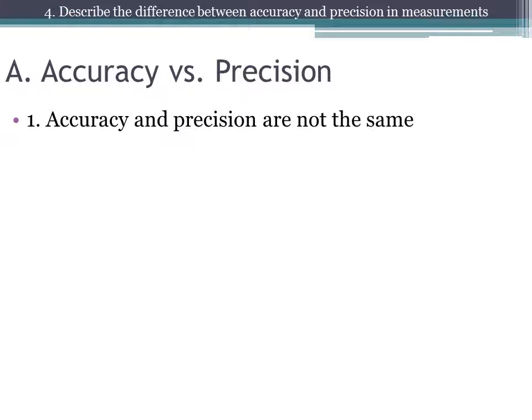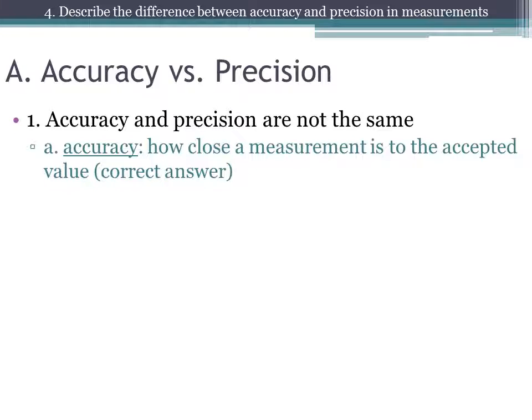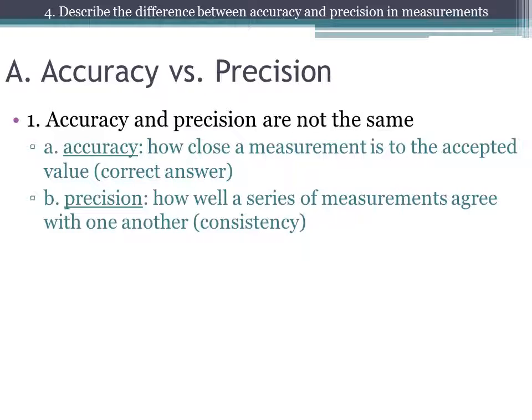Accuracy and precision are not the same thing. You may have used both of these terms to mean the same thing, but they actually are not the same thing as far as measurements go. Accuracy is how close a measurement is to the accepted value, the correct answer. Precision is how well a series of measurements agree with one another, or the consistency of the measurements — it has nothing to do with how close those measurements are to the correct answer.